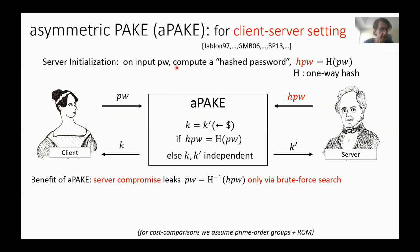In a client-server setting, it's useful to have an asymmetric version of PAKE, called APAKE, where the server stores a hashed password, not the password itself, and the protocol checks that the client's password hashes into the server-held value. The advantage is that on server compromise, the adversary doesn't get the password itself but its hash. So if it wants to recover the password, it must do a brute force search. But if the entropy of the password is high enough, the search will fail to find the password.